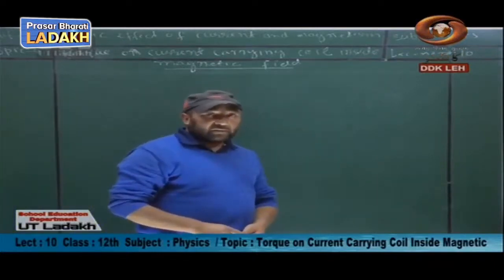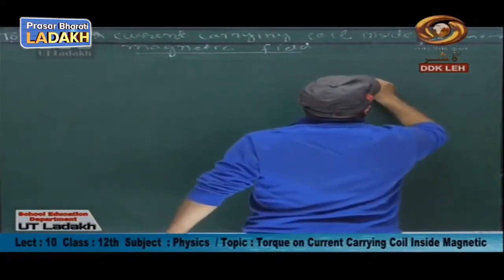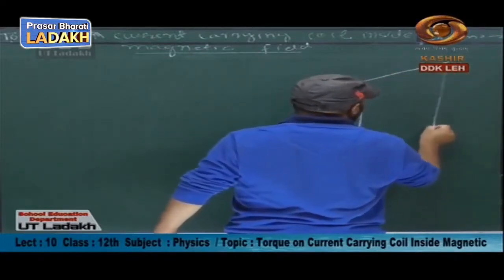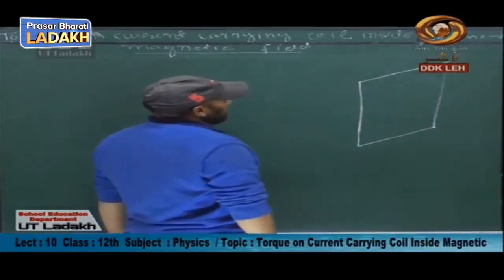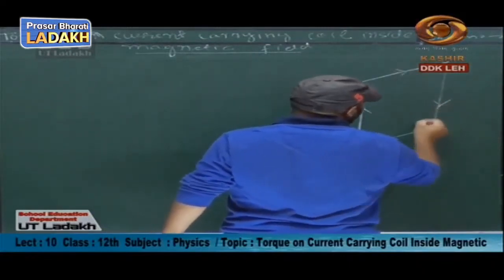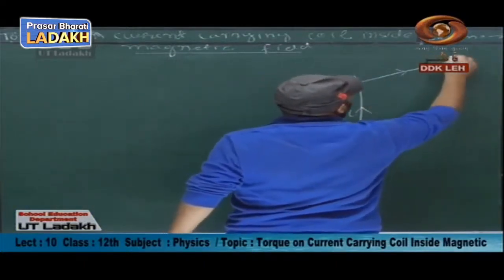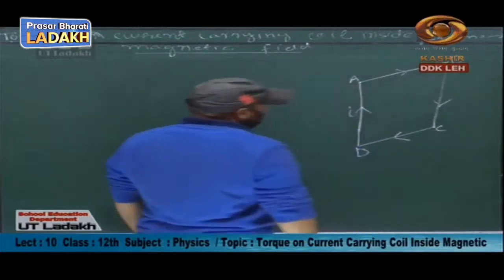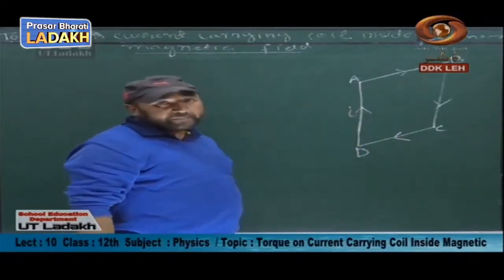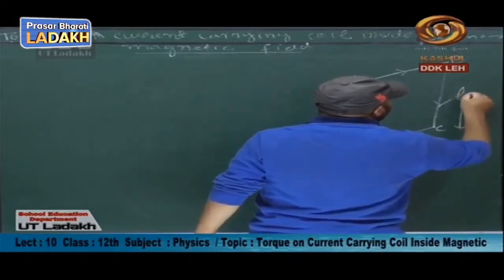Suppose we have a coil — this is our coil — and it carries current I. Let us label the sides AB and CD. This is a rectangular coil through which current I flows, and L is the length of this coil.